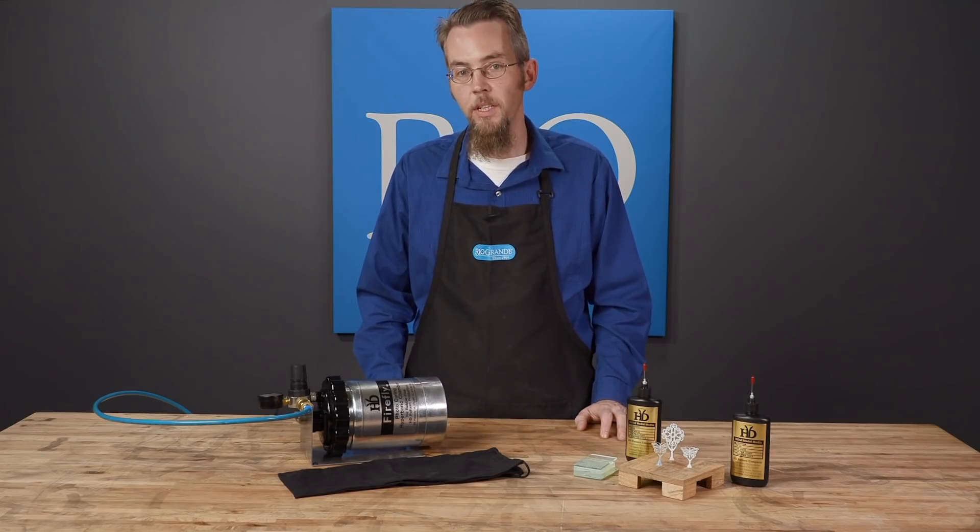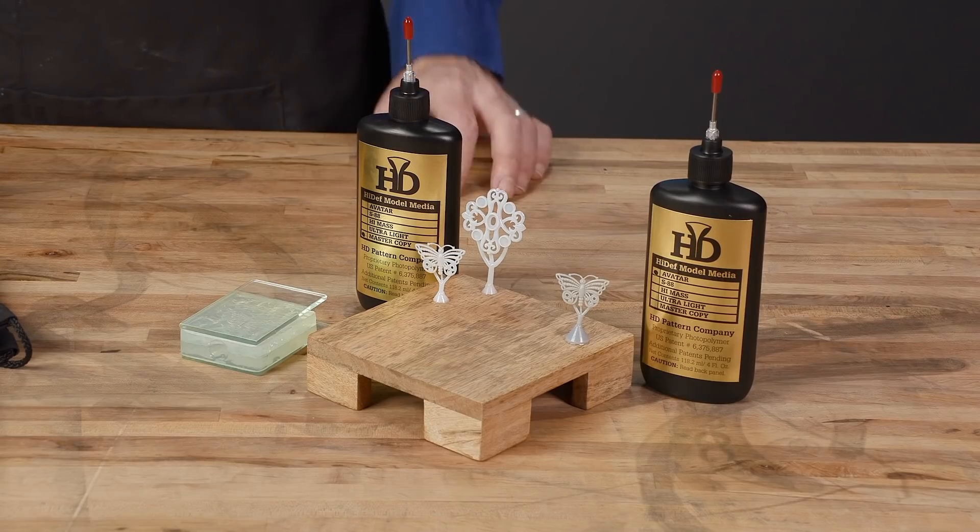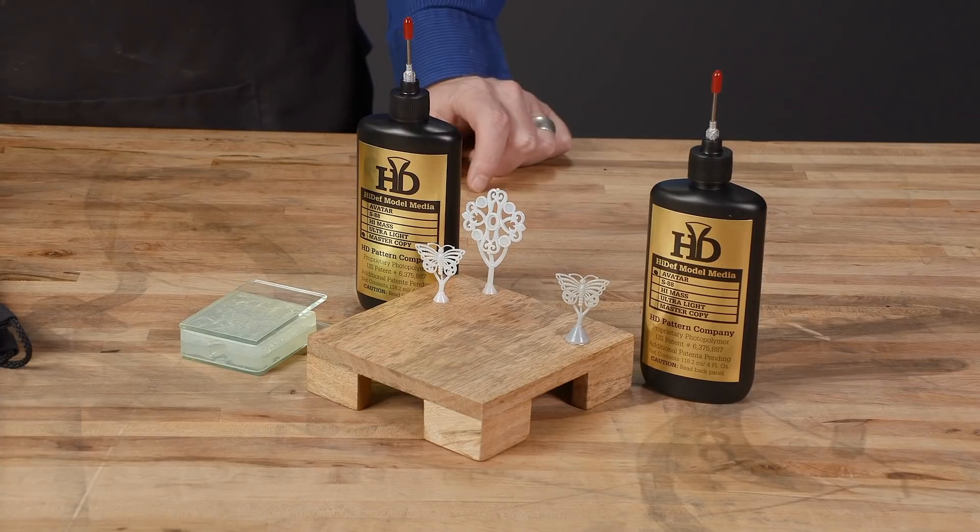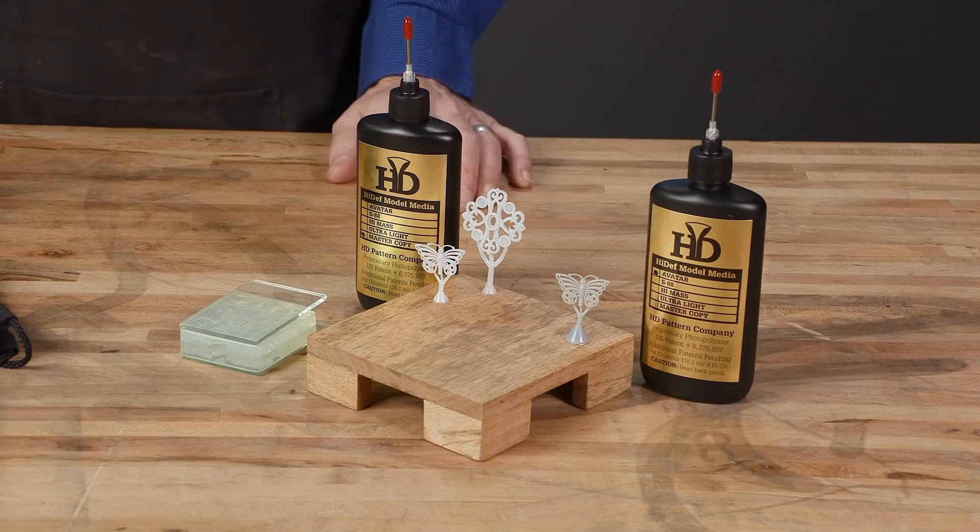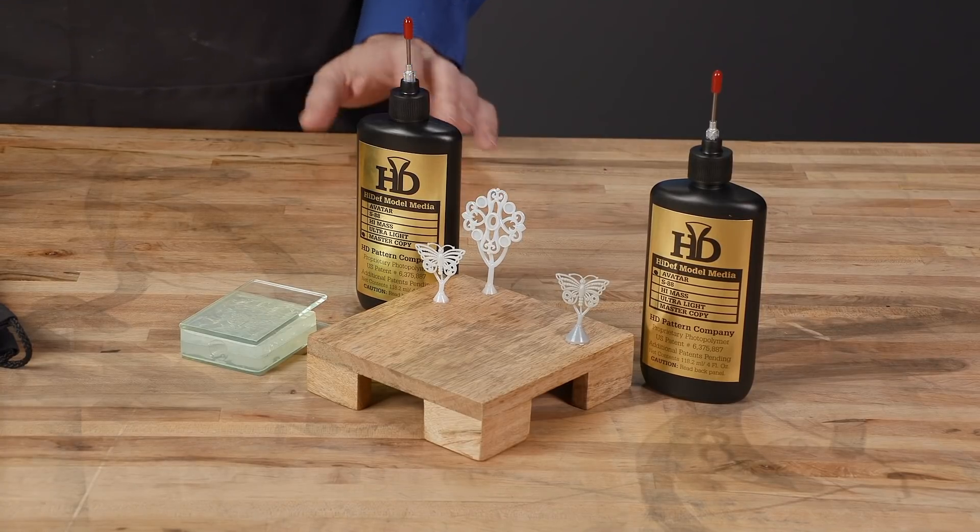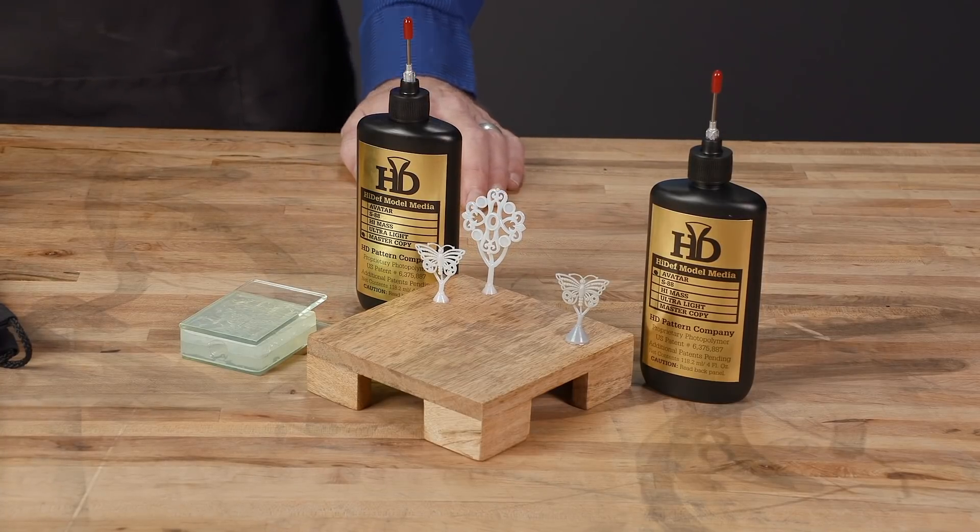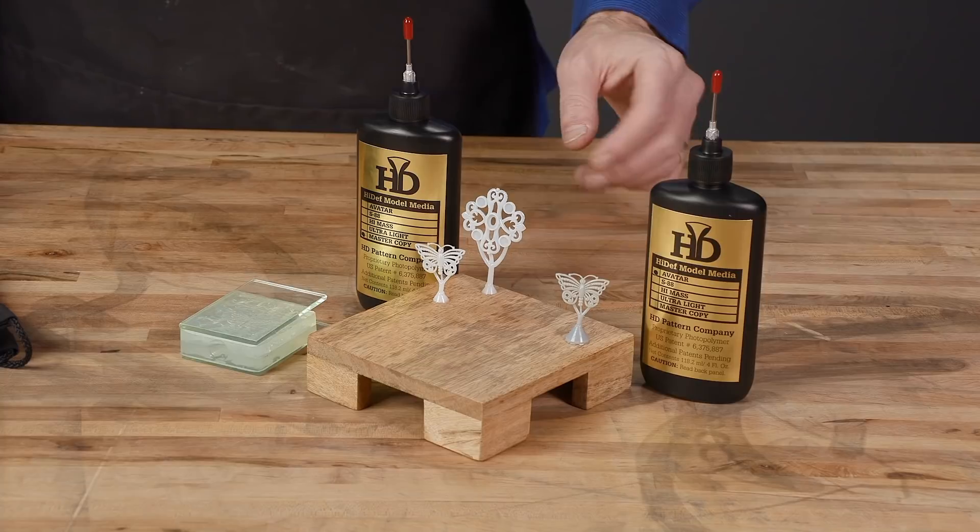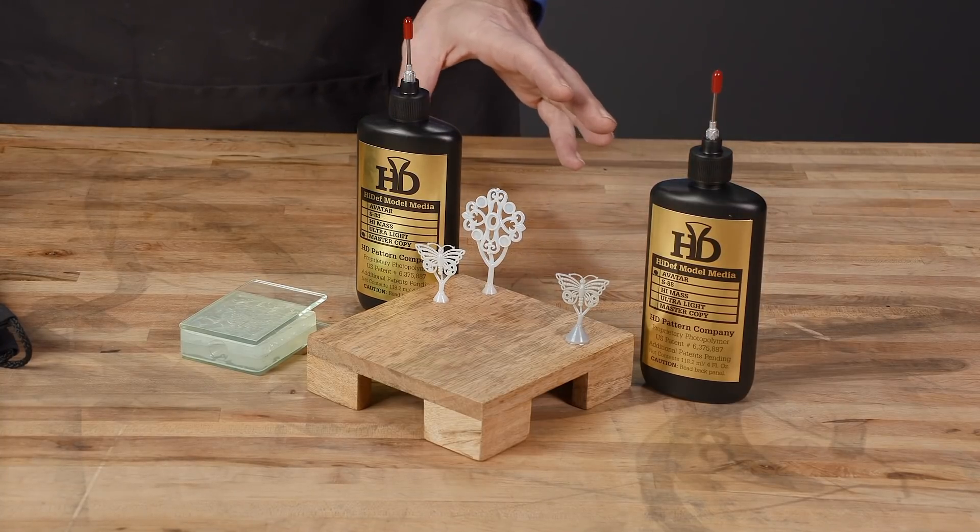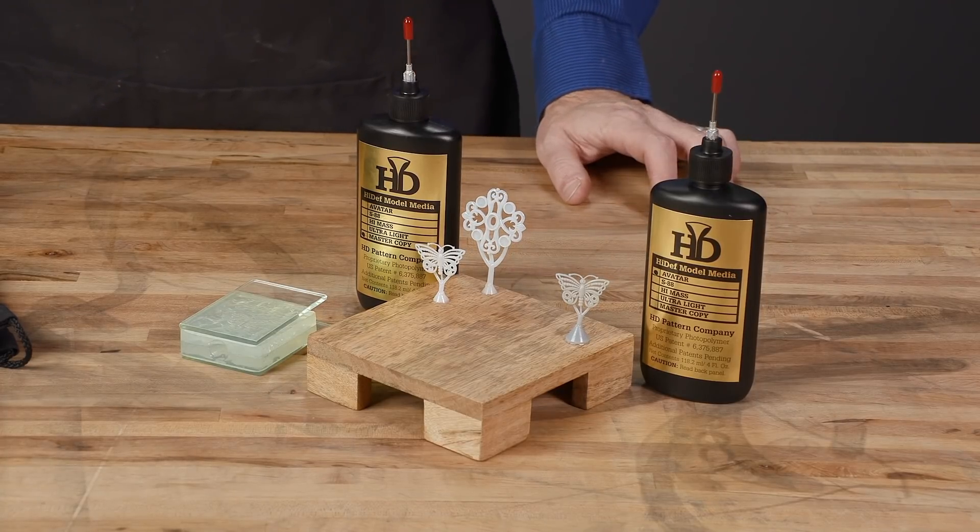The Firefly has two materials that are sold separately from the kit that are available to use. The master copy material is for making repeatable one-to-one master models using your RTV molds. Because there is virtually zero shrinkage with this material, your ring sizes and your stone sizes will be unaffected. These masters can be stored for later molding. The HD Avatar material is the castable material. Both will inject the same way into your RTV molds. But for casting instructions on the HD Avatar, please consult our website.